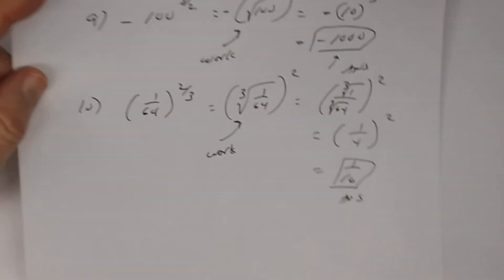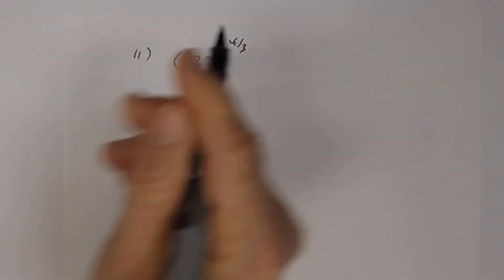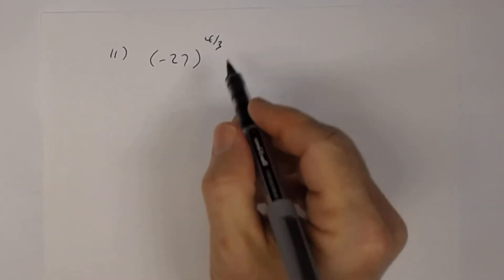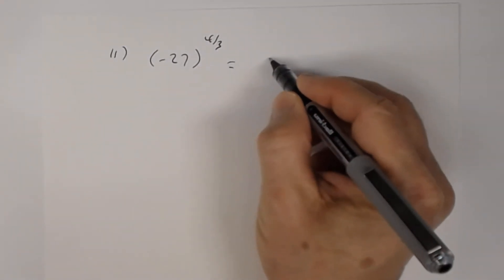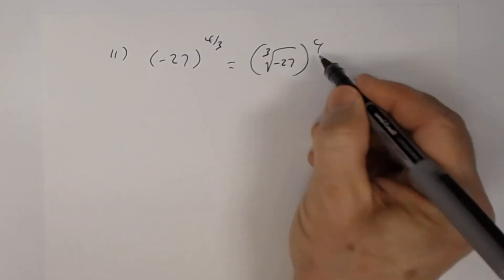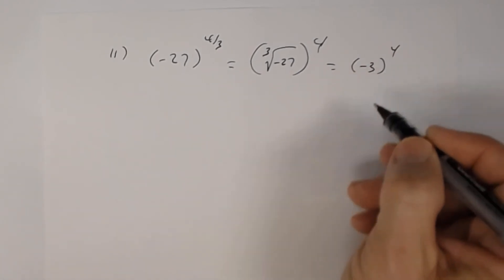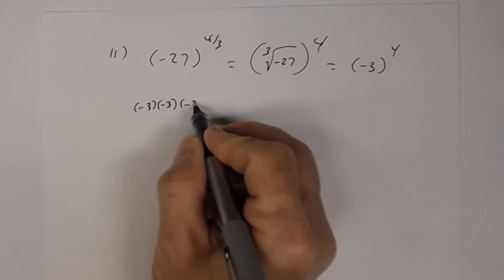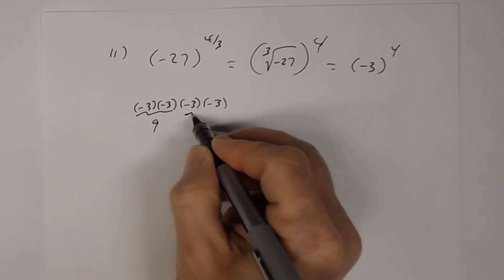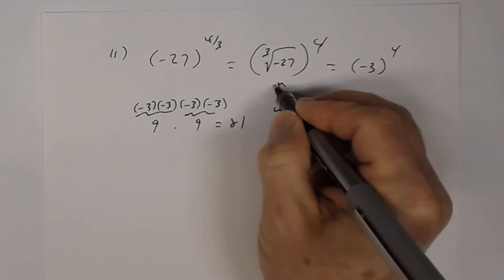Number 11: negative 27 to the 4/3. The negative is inside the parentheses, so it's your base. This becomes the cube root of negative 27, to the 4th power. The cube root of negative 27 is negative 3. Then negative 3 to the 4th means negative 3 times negative 3 times negative 3 times negative 3: negative 3 times negative 3 is 9, and 9 times 9 is 81. The answer is 81.